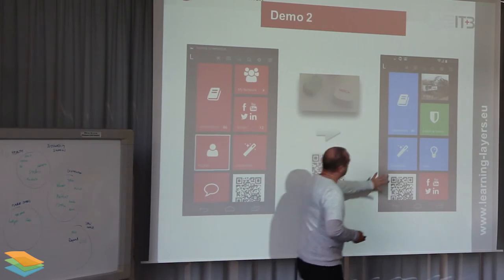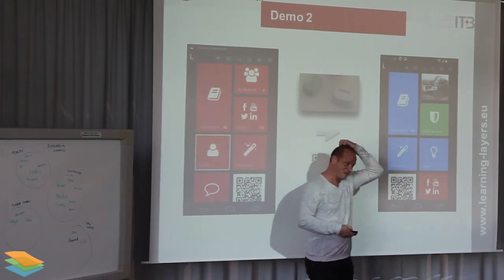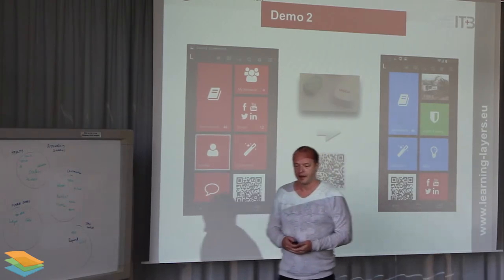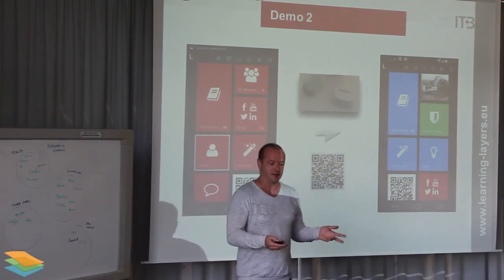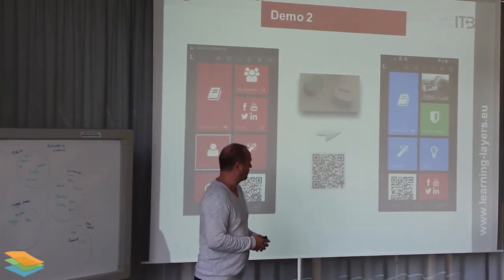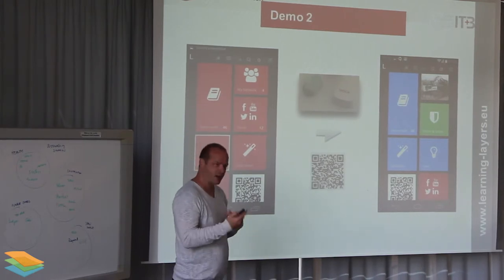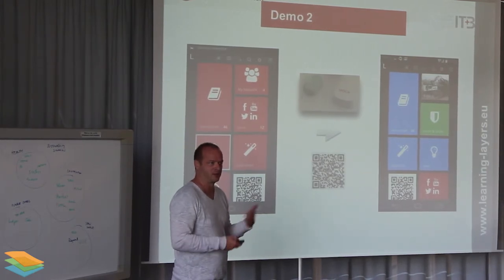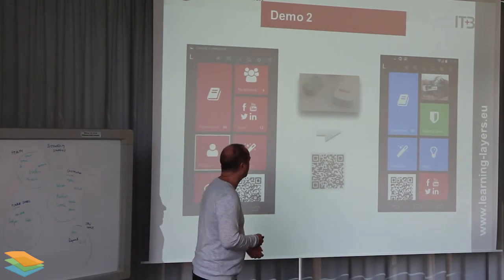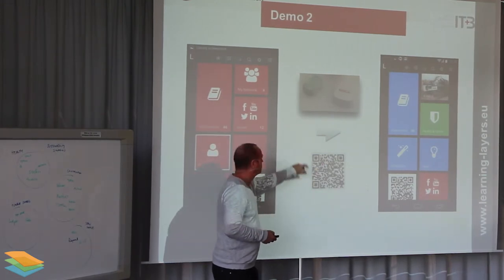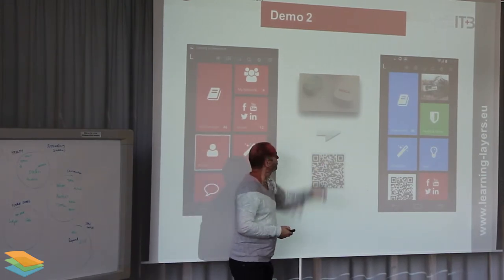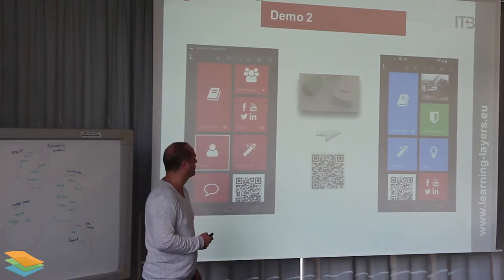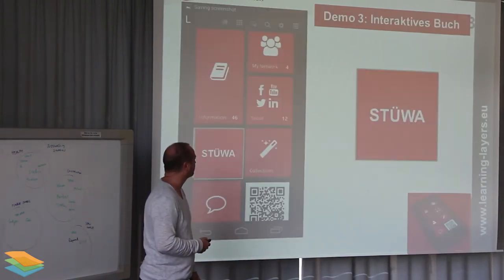This could, for instance, be created by a vendor or the manufacturer of the machine. They could create such mosaics or bundles and then share them in the marketplace with others — with apprentices, with workers and so on. QR tags is one way of doing it, but you can also think about using sensors like iBeacons and other types of sensors to contextualize this.